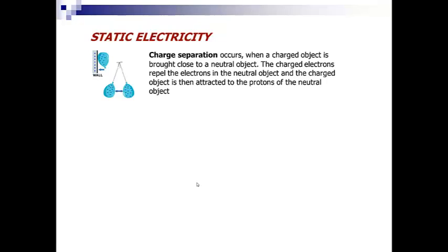Charge separation occurs when a charged object is brought close to a neutral object. The charged electrons repel the electrons in the neutral object, and the charged object is attracted to the protons of the neutral object. For instance, the wall is neutral, and the balloon is negative. So the negative electrons are pushing away the electrons of the substances that make up the wall, and they are attracted to the protons. Here, you have the negative particles repelling, so that is opposites repel, or like repel. For example, a balloon sticks to a wall after it is rubbed over your hair.